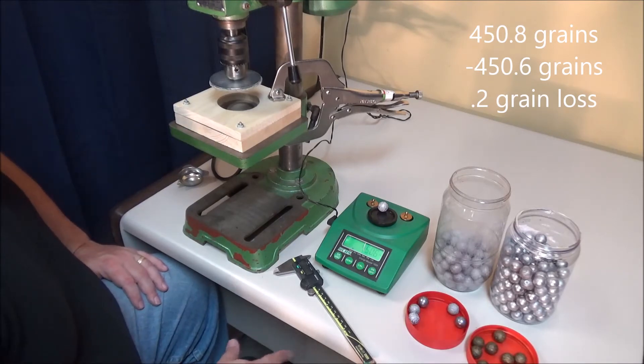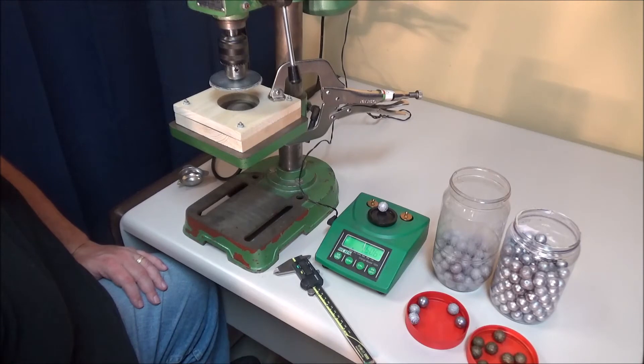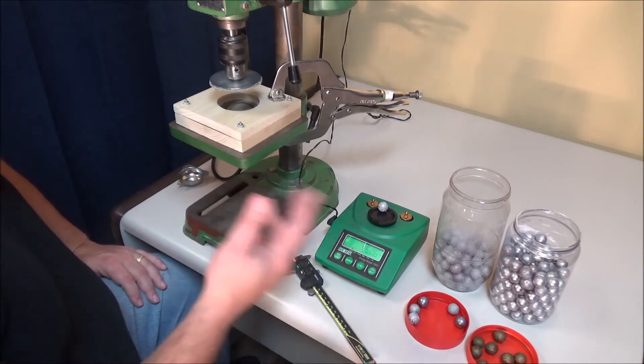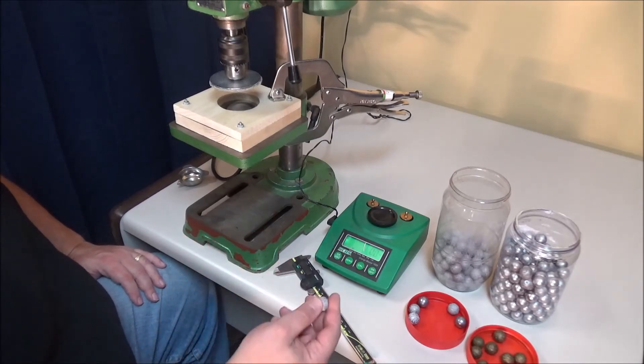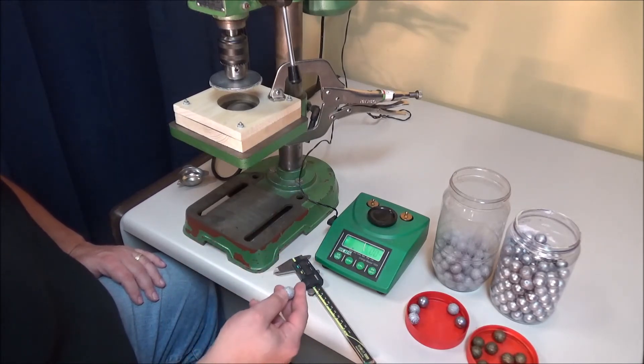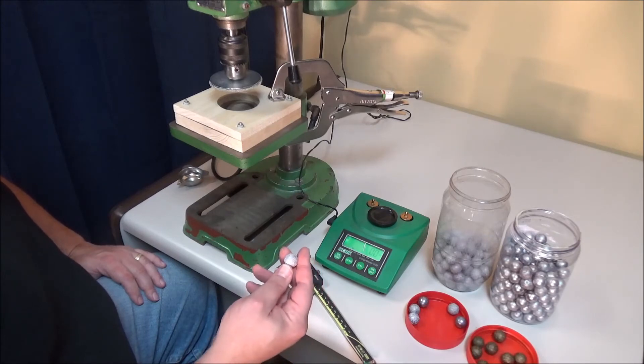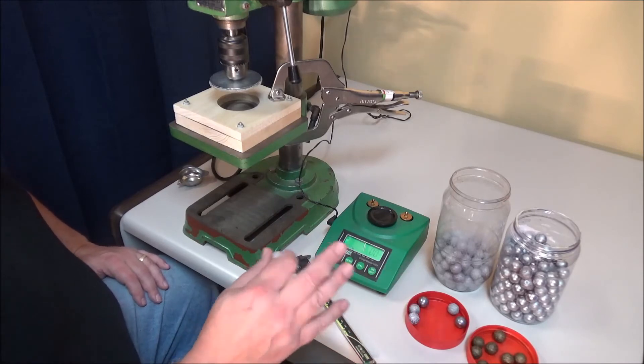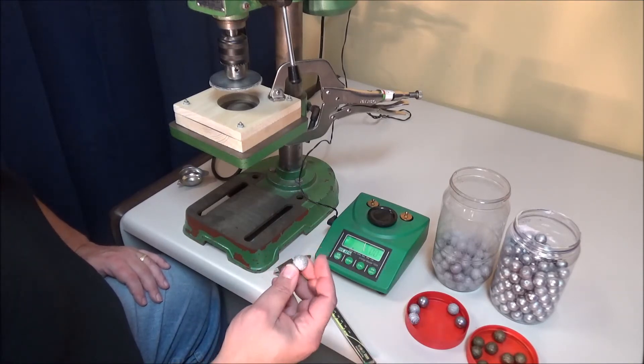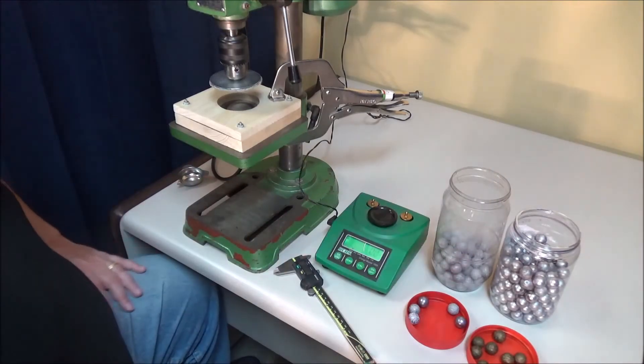So there might be a very small amount of material removal, 0.1, 0.2 grains, but certainly nothing that's going to affect your accuracy. And it's consistent, of course, it'll be consistent across all your balls. So if the weight was a critical factor, you'd weigh them and do your discarding of your flyers after processing them. Personally, I don't bother. I don't weigh round balls at all. I do with my rifled guns, but not with the smoothbore stuff.